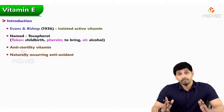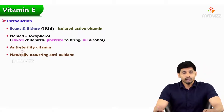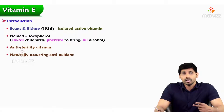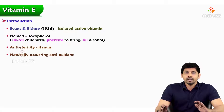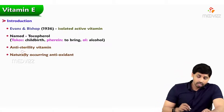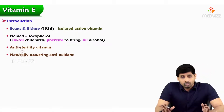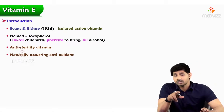Evans and Bishop are the two scientists who isolated the active vitamin and named it tocopherol — 'tokos' means childbirth, 'ol' means alcohol, so it is the alcohol that brings about childbirth. It is otherwise known as the anti-sterility vitamin. It is a naturally occurring antioxidant and an anti-sterility vitamin, as its deficiency causes sterility in animals but not observed in humans.